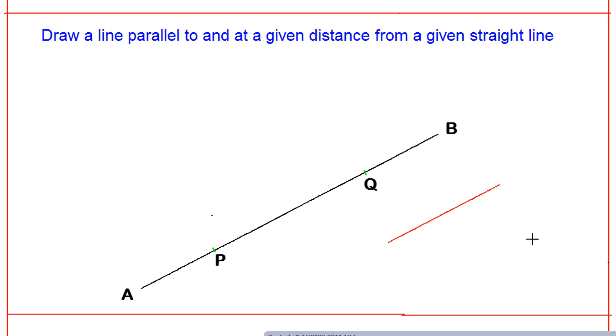If I give a name to this straight line, this is a given point X and here is the given point Y. Now my interest is to draw a parallel line to the line AB which is at a distance of XY.